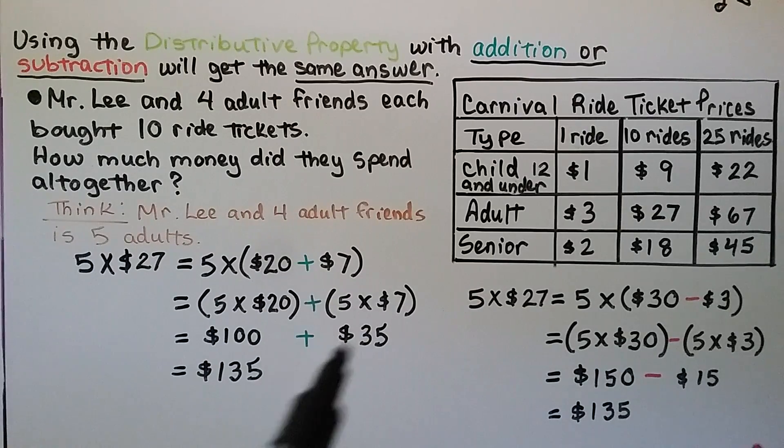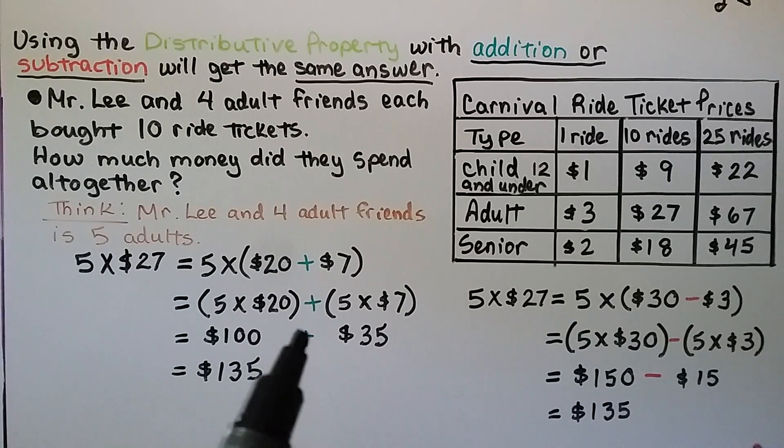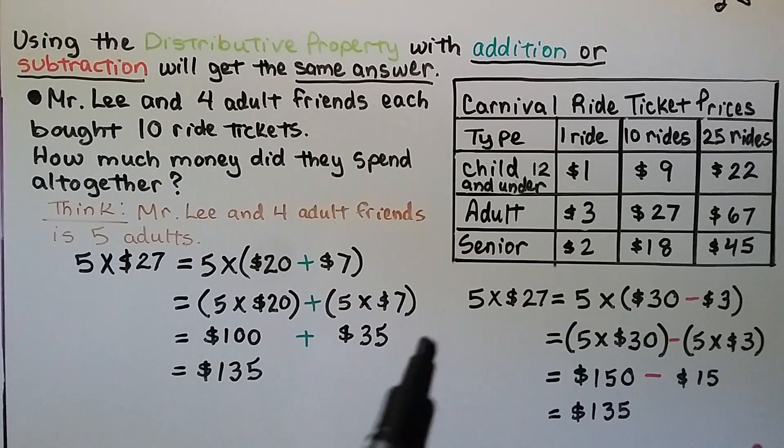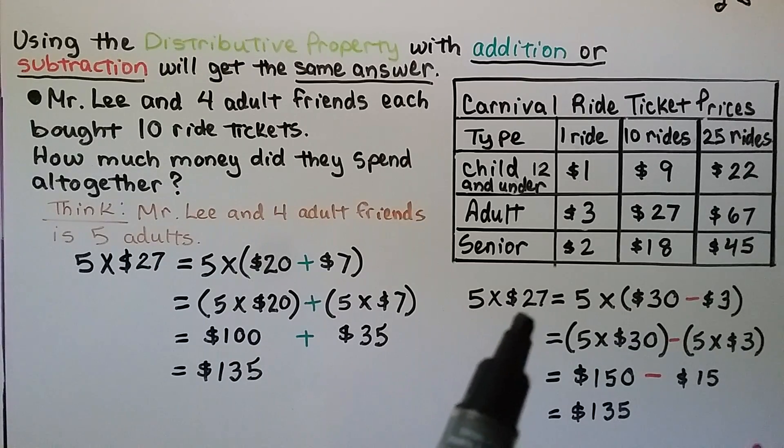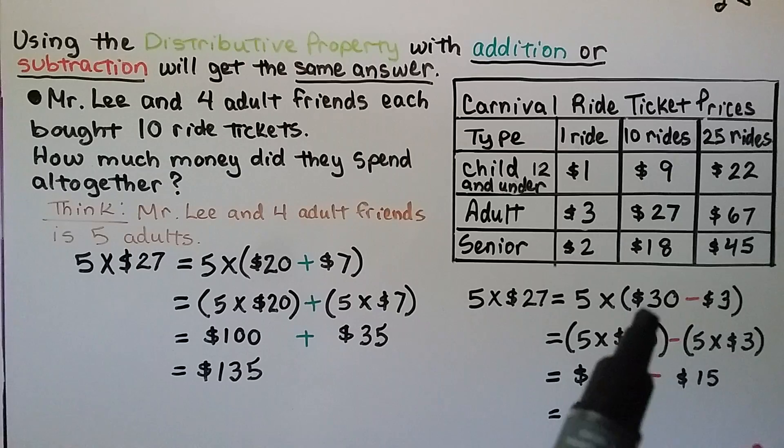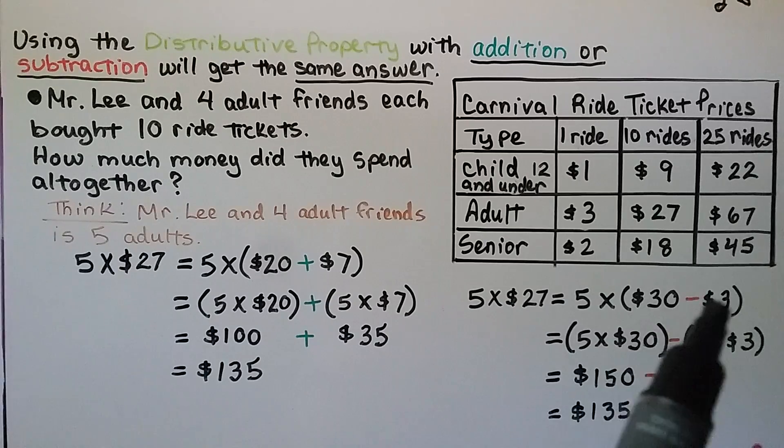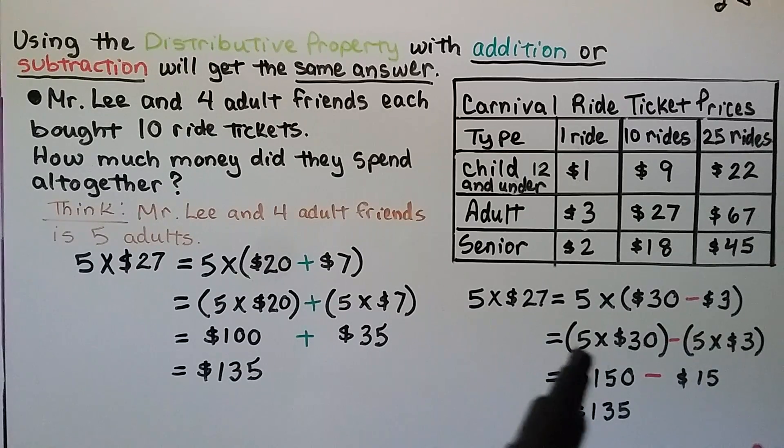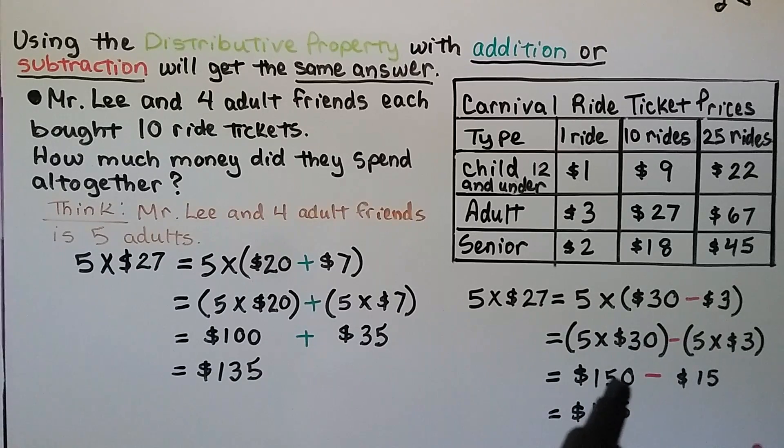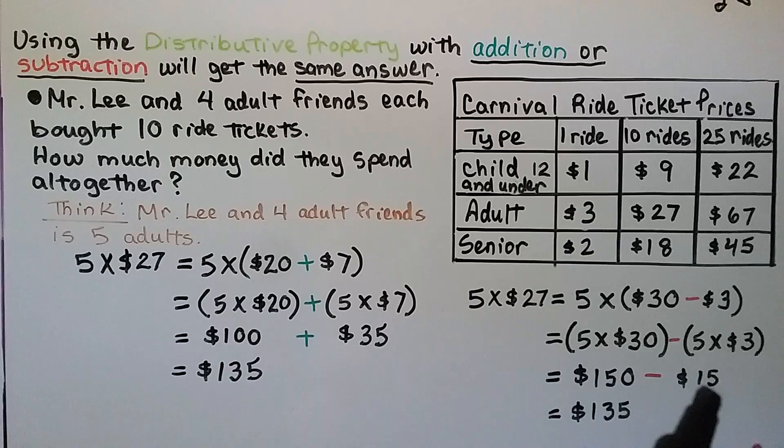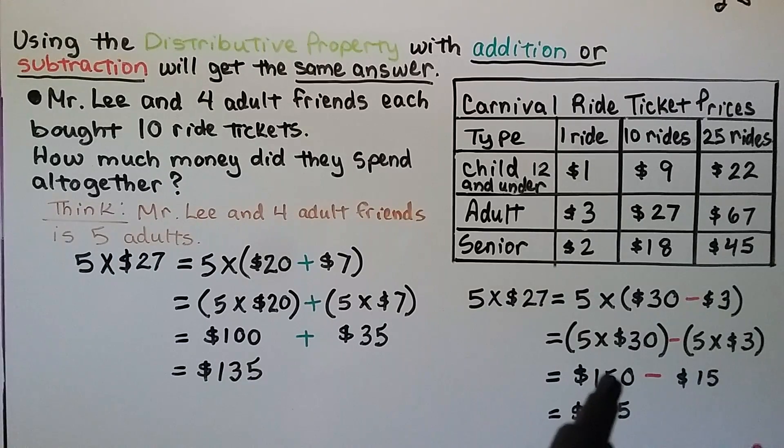That was using addition. And notice using addition, we had a plus sign between all of these. We had it between our addends, we had it between our parentheses, and we had it between our partial products. When we use subtraction, we can think 5 times $27 is equal to 5 times $30 minus $3. $30 minus $3 is $27, isn't it? But now we're using subtraction. We do 5 times $30, which is $150, and we do 5 times $3, which is $15, and we think $150 minus $15 is equal to $135. So it didn't matter whether we used the distributive property with addition or subtraction. We got the same answer.